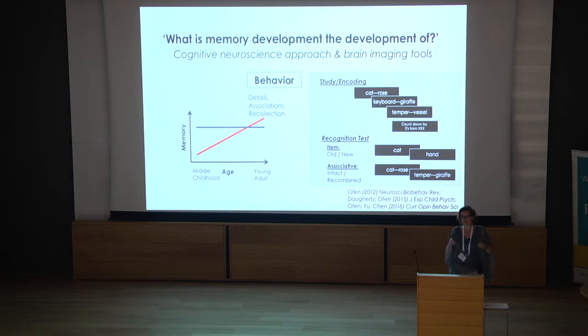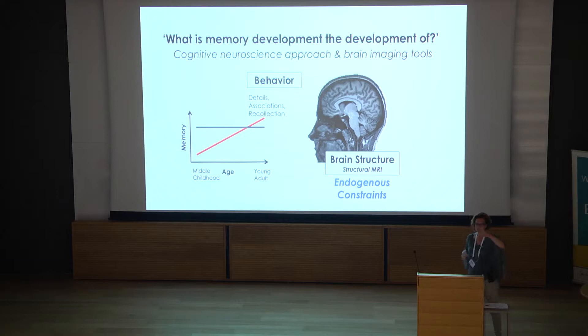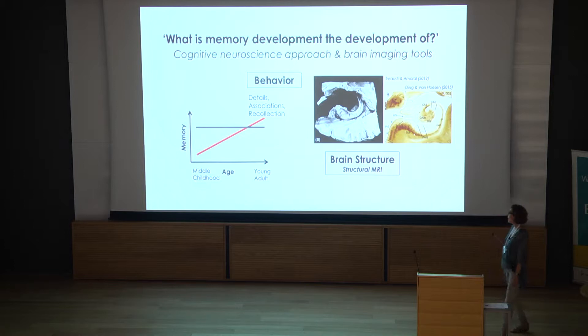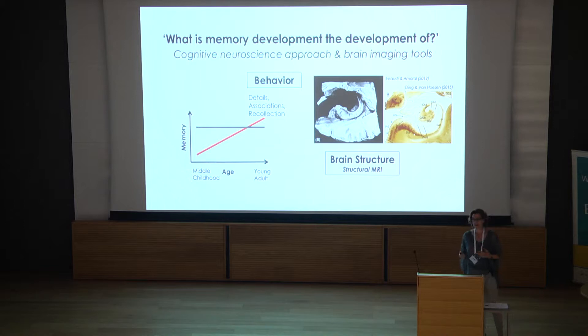We have some handle on behavior, and we can start asking how the brain relates to improvement or stability in these specific aspects of memory. Obviously, since I study memory, I focus on the hippocampus. The hippocampus is a very complex structure — you can look at it along its long axis or in cross-section and see very specific internal organization. This organization includes the hippocampal subfields, which you can see highlighted in a specific histological slice.